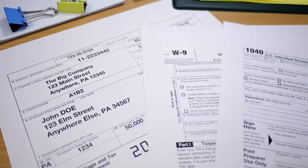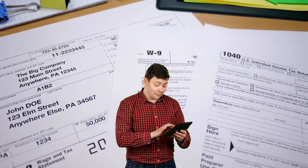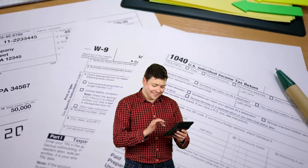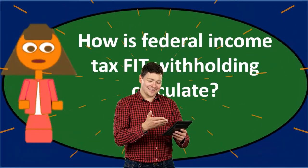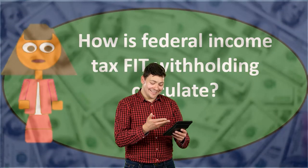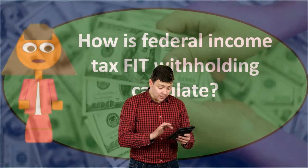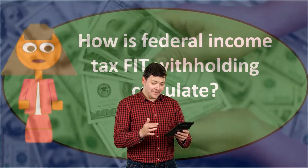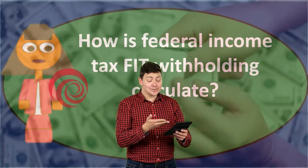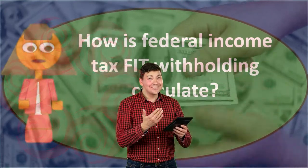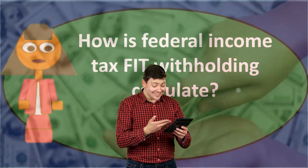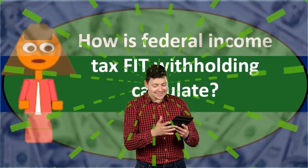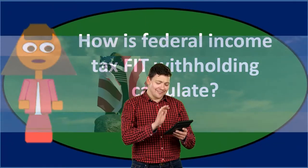When we calculate social security and medicare, we essentially adjust the wages to the appropriate taxable amount and then multiply by one flat rate to get the tax. The federal income tax, however, requires us to use tables or the percentage method in order to figure out the correct withholding.